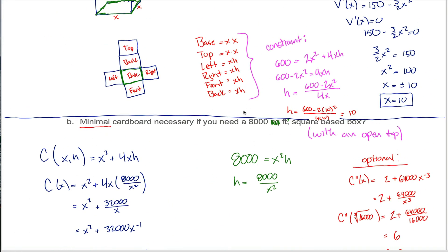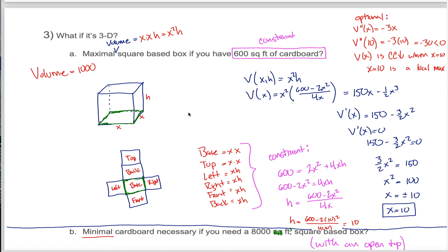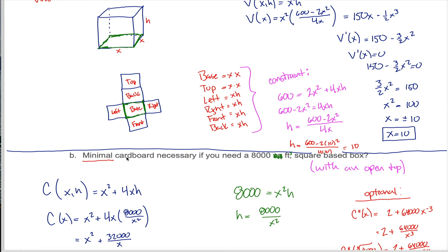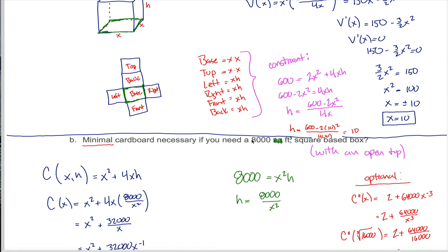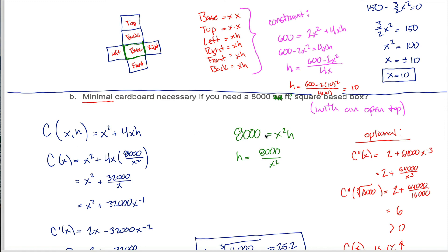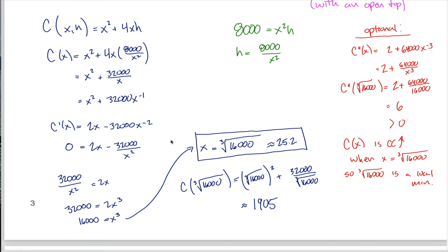If you wanted an 8,000 cubic foot box with a square base and no top, you would need about 1,905 square feet of cardboard to construct that box. The key takeaway is: you have to be really careful about what your function is and what your constraint is. Look for words like maximal or minimal — those denote your function. The other piece of information, the one with the numeric value, will be your constraint. Write your function in terms of two variables, use your constraint to reduce to one variable, then find and classify critical values using the first and second derivatives.